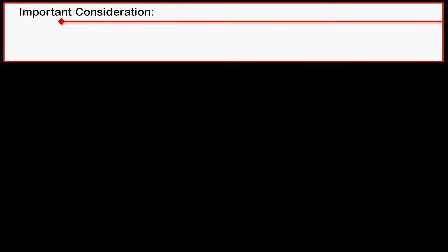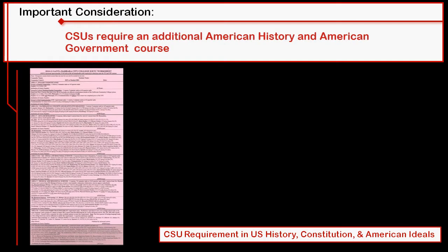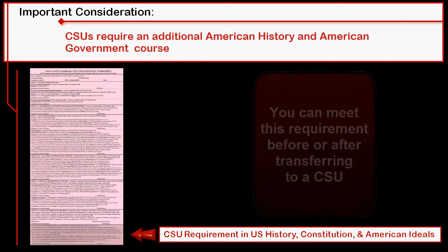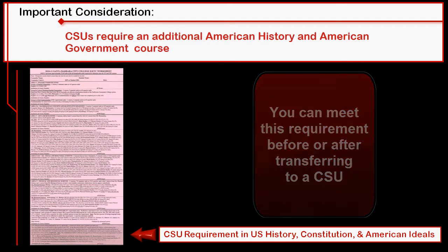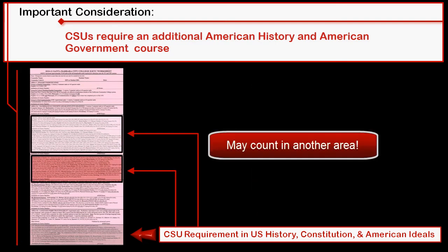Here's an important consideration when choosing courses for IGETC. If you're thinking of transferring to a CSU, they require an additional American History and an American Government course. This can be met before or after transfer to a CSU. Most, but not all, CSUs will also use these courses in the IGETC areas 3 and 4. See the IGETC form for more information on this requirement.